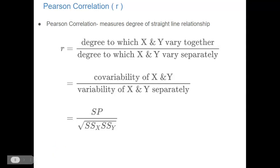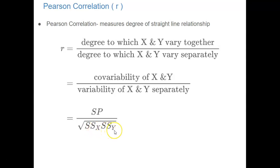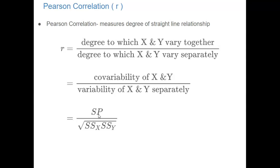The numerator is called the sum of products, and the denominator uses the sum of squares for X and the sum of squares for Y — which is just a measure of variability for each variable, placed under a square root. The sum of products is conceptually almost exactly the same thing as the sum of squares.